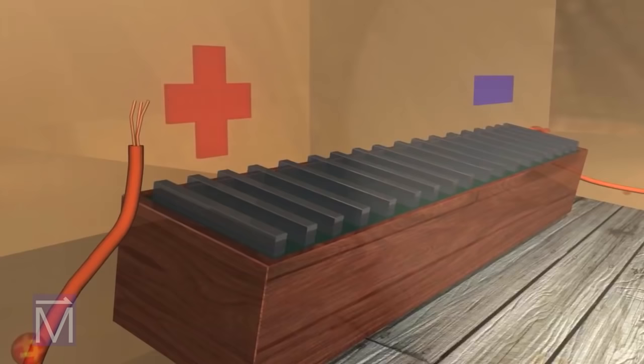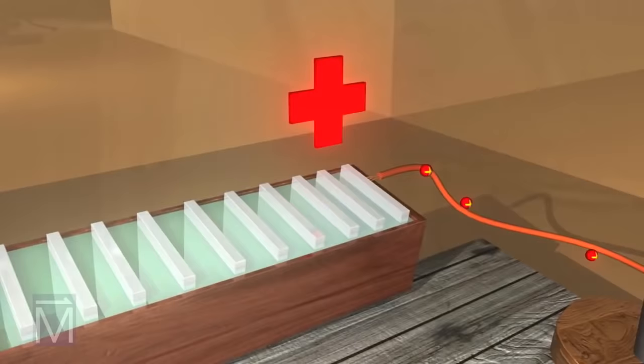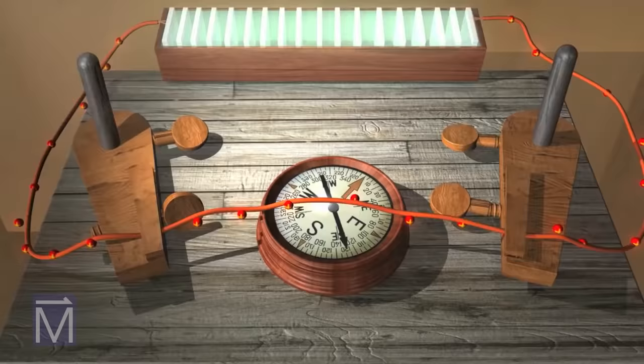If you reverse the direction of the current, then the magnetic field around the wire moves in the opposite direction, and the needle on the compass flips to reflect the change in field.